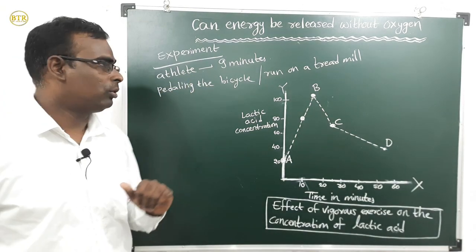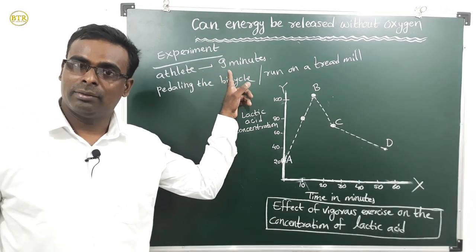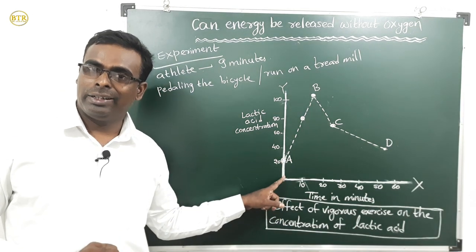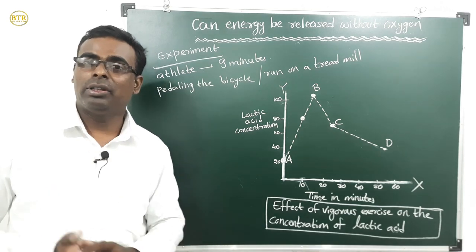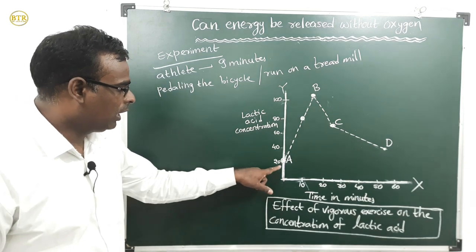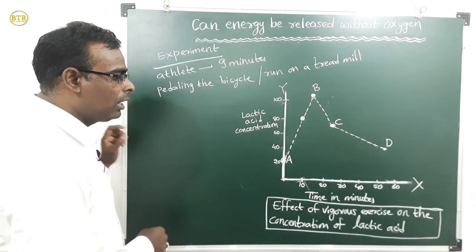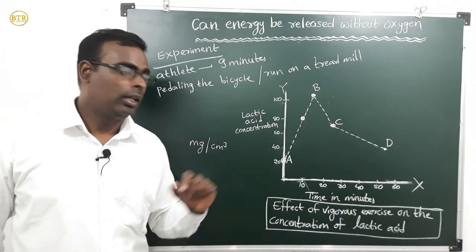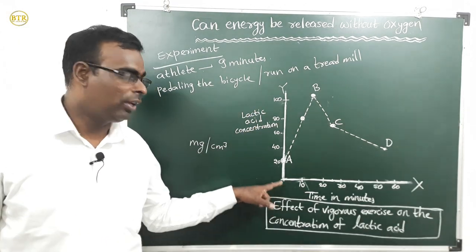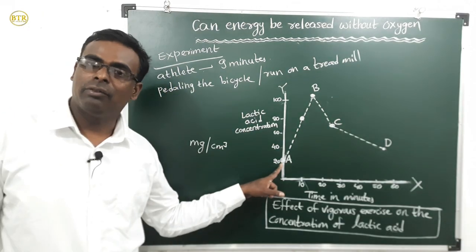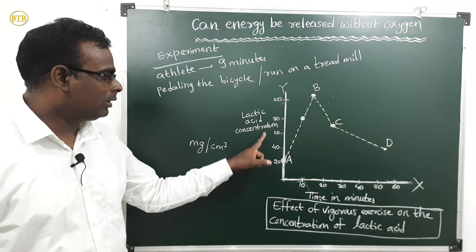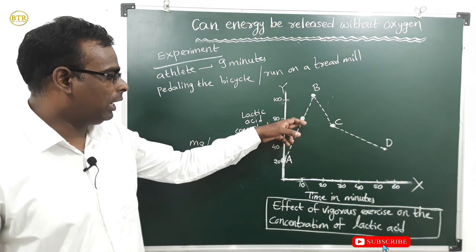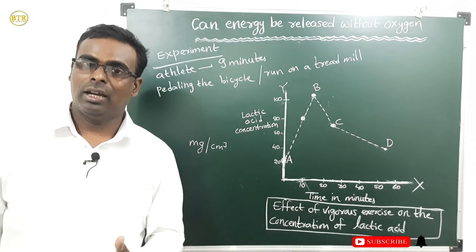Lactic acid concentration also increases as the time of exercise increases. Before starting the experiment we took blood from the athlete and checked the lactic acid amount. We found it was 20 milligrams per centimeter cube. After that, at around 10 minutes, we again took the blood and checked the lactic acid concentration.